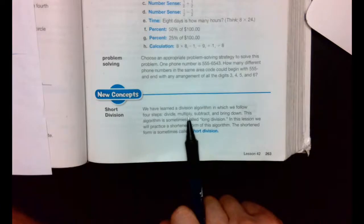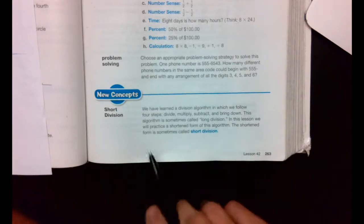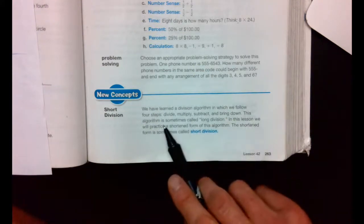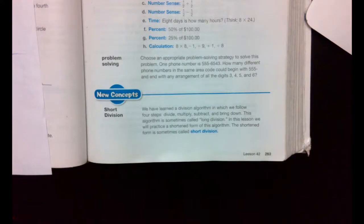We're going to start at the bottom of the definition of short division. We have learned a division algorithm in which we follow the four steps: divide, multiply, subtract, bring down, do it again. This algorithm is sometimes called long division. In this lesson, we will practice a shorthand form of this algorithm. The shorthand form is sometimes called short division.